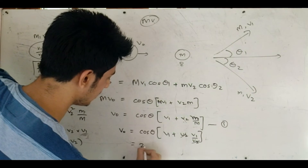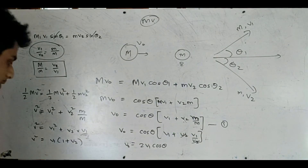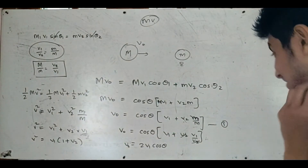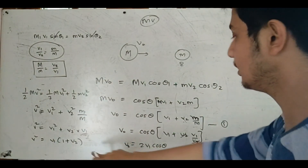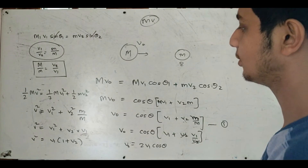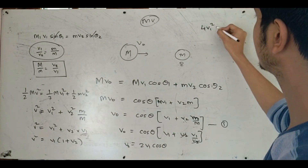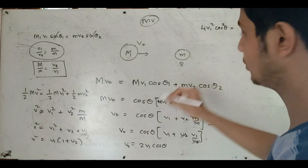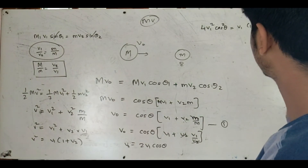From the momentum equations with theta1 equal to theta2, we get 2V1 cosθ equals V0. Then V2 equals 2V1 cosθ. Substituting back, we get 4V1 squared cosθ equal to V1 squared into 1 plus V2 over V1.